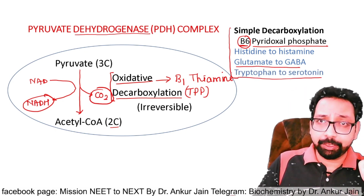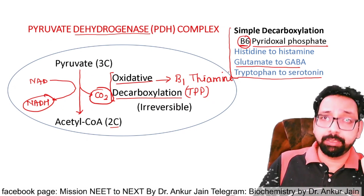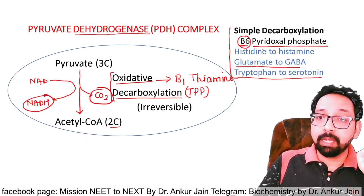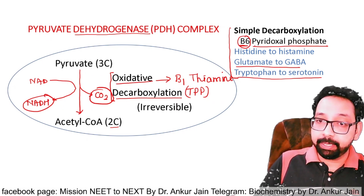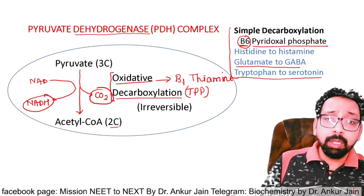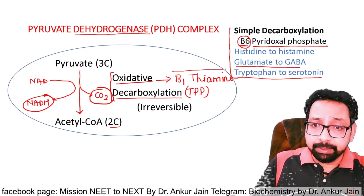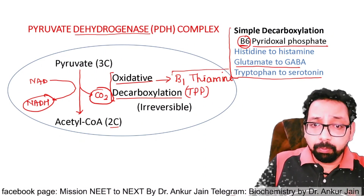Other common examples of simple decarboxylation include glutamate to GABA and tryptophan to serotonin. These three reactions — histidine to histamine, glutamate to GABA, and tryptophan to serotonin — are the common reactions on which questions are asked, and all are examples of simple decarboxylation with B6 as cofactor.